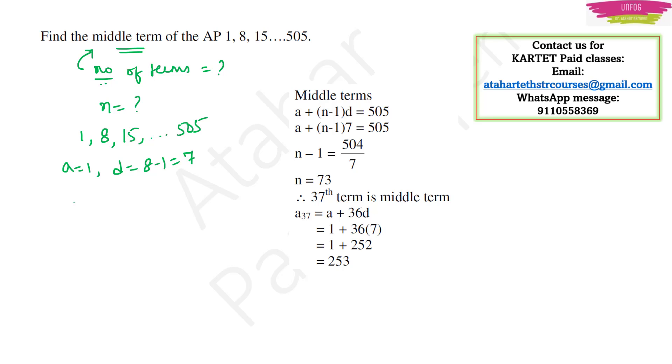So my Tn will be equal to a plus n minus 1 into d. But Tn I have, they have given the nth term which is 505. But I don't know the number of terms. So here a is 1 plus n minus 1 into, what is common difference? It is 7.